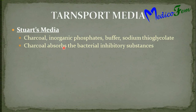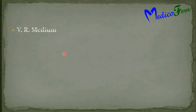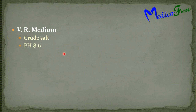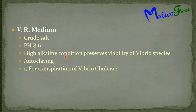Thioglycollate medium: charcoal absorbs bacterial inhibitory substances. It is sterilized by autoclaving and provides viability of gonococci and aerobes. VR medium (Venkatraman-Ramakrishnan medium) is a crude salt solution with a pH of 8.6. It is highly alkaline and preserves the viability of Vibrio cholerae species. It is sterilized by autoclaving and used for transport of Vibrio cholerae.